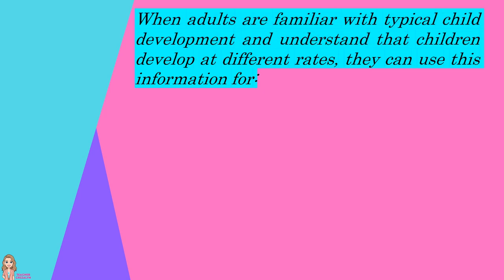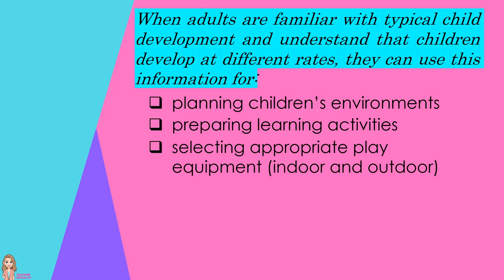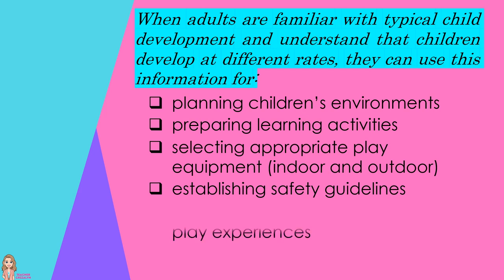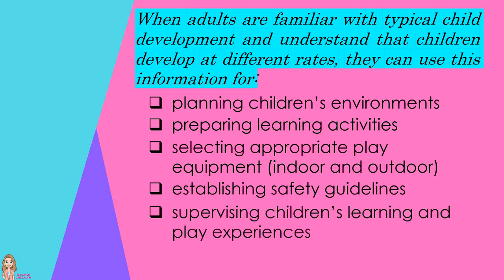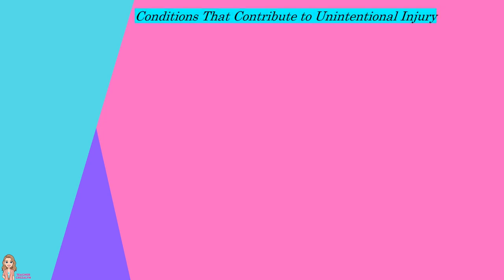When adults are familiar with typical child development and understand that children develop at different rates, they can use this information for planning children's environments, preparing learning activities, selecting appropriate play equipment indoor and outdoor, establishing safety guidelines, supervising children's learning and play experiences, and developing safety education programs. It is important to recognize that circumstances such as fatigue, change, or distraction increase the risk of unintentional injury.